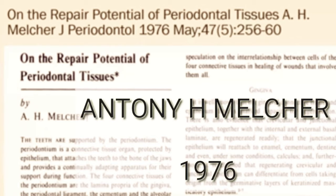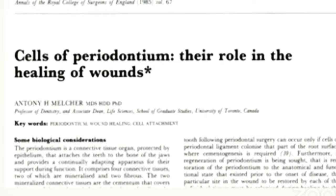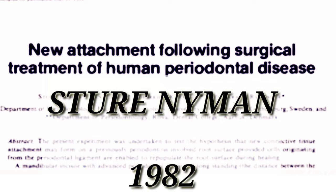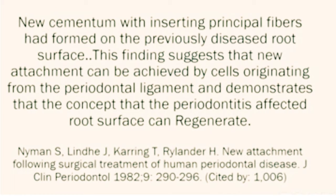Melcher in 1976, in the Journal of Periodontology, talked about the repair potentials of periodontal tissues — the cells of the periodontium and their role in wound healing. This was the basic concept for guided tissue regeneration (GTR). Based on Melcher's concept of cells populating the healing wound, Nyman et al. provided proof of concept by introducing a barrier membrane to prevent migration of cells downward. New cementum with inserting principal fibers had formed on the previously diseased root surface, suggesting new attachment can be achieved by cells originating from the periodontal ligament. This paper from Nyman and Lindhe in 1982 was a game changer.